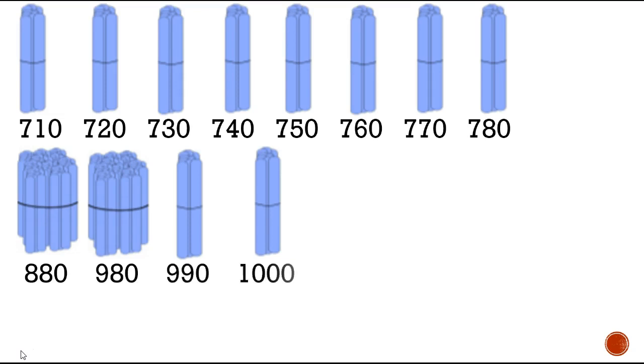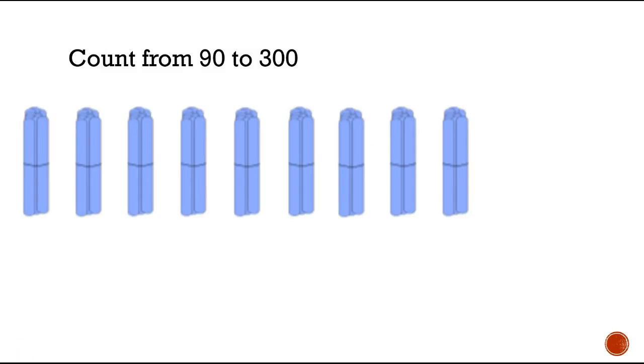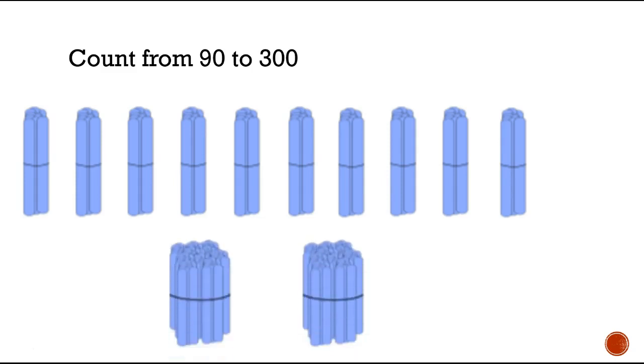Okay now we're going to count from 90 to 300. So we've got 90 here, let's add 10 more to make 100, and now all we need to do is count by hundreds because that's the easiest way to do this. So let's count: 90, 100 we added our tens, 200, 300.